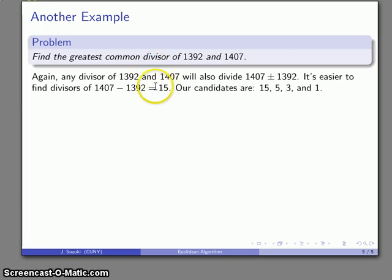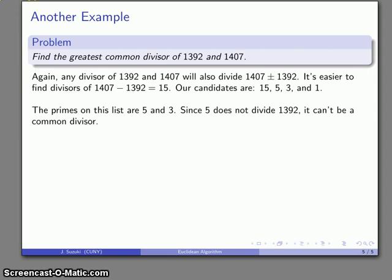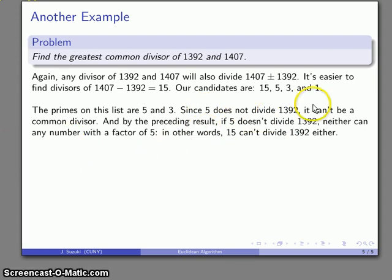So our possible candidates, things that divide 15 are 15 itself, 5, 3 and 1. Now, it's useful to focus on the primes on the list because by the preceding theorem, if a prime doesn't divide n, then a prime that divides d, then d also does not divide n. So if I know that a prime doesn't divide n, I can get rid of a whole bunch of possibilities for what the greatest common divisor could be. So again, focusing on those primes, 5 doesn't divide 1,392, which means that whatever it is, it can't possibly be a common divisor, which means it has no chance of being the greatest common divisor. So 5 doesn't work. However, our preceding result notes that because 5 doesn't divide 1,392, neither can anything divisible by 5. So that also strikes 15 from the list of possibilities. If 5 fails, so will 15.